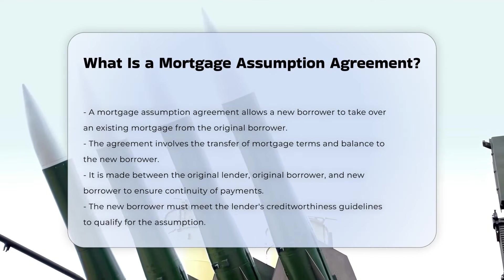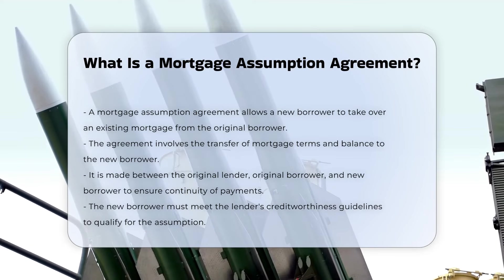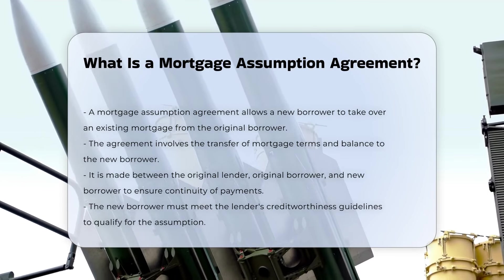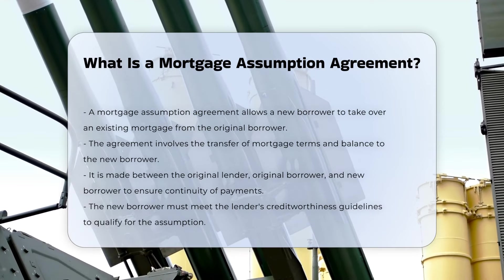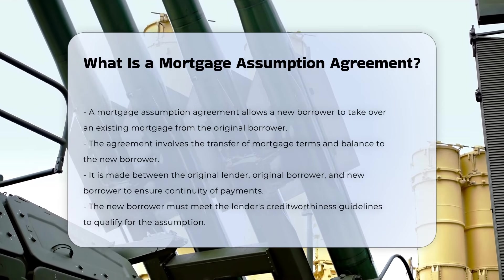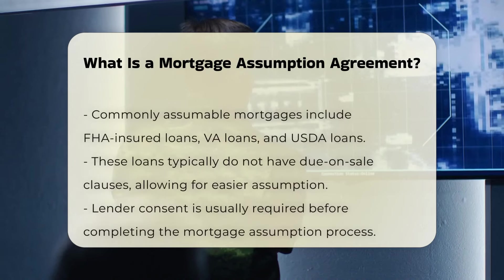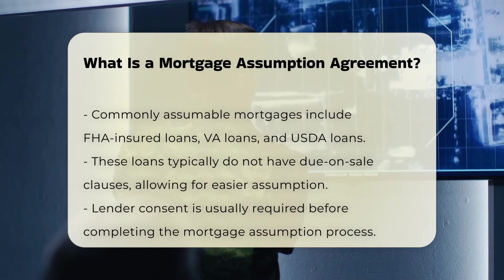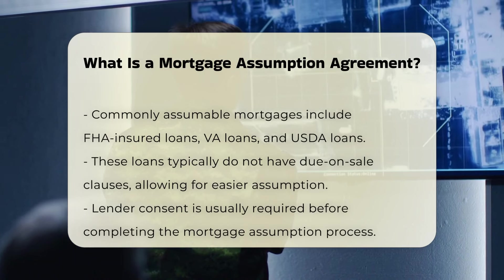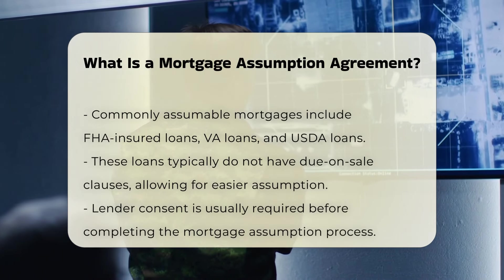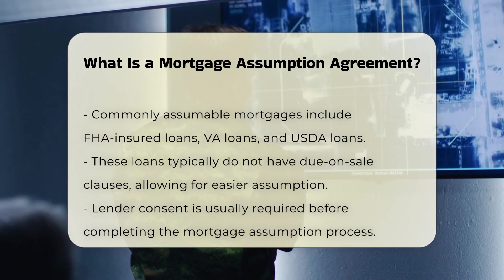Key components: The agreement is made between the original lender, the original borrower, and the new borrower. It ensures a smooth transition of mortgage payments without interrupting the payment schedule. The new borrower must qualify under the lender's guidelines, which typically include being creditworthy. For example, FHA and VA loans require the buyer to be creditworthy to assume the mortgage.